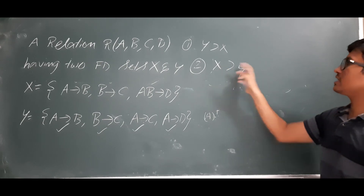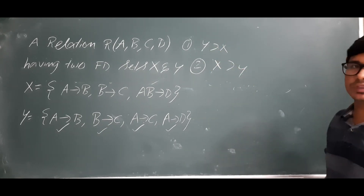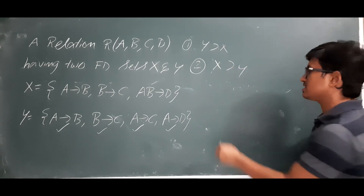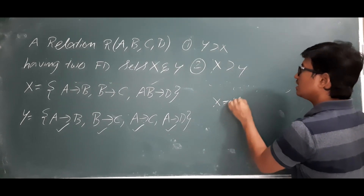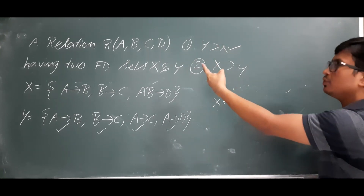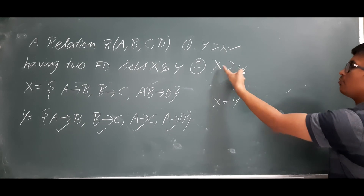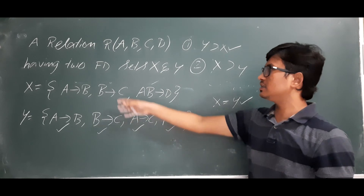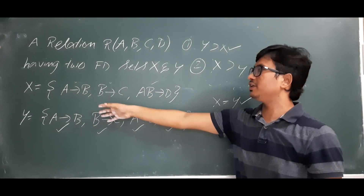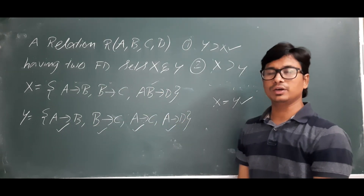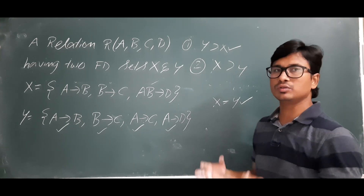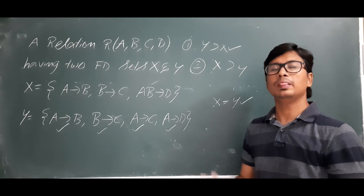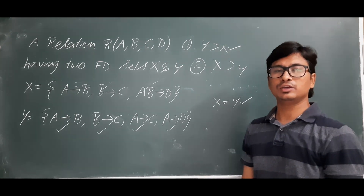Step three: if Y covers X and X covers Y, then we say X is equal to Y. We have proved that Y covers X and X covers Y, so we can conclude that X is equal to Y — meaning these two sets of FDs X and Y are equal. I hope you have understood the concept with this example. If not, I will discuss another example. Thank you so much.